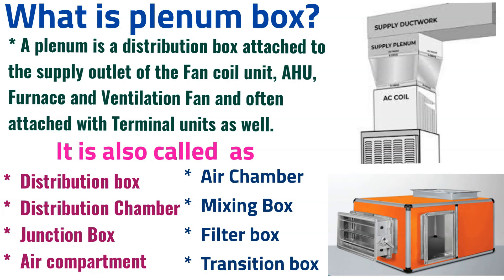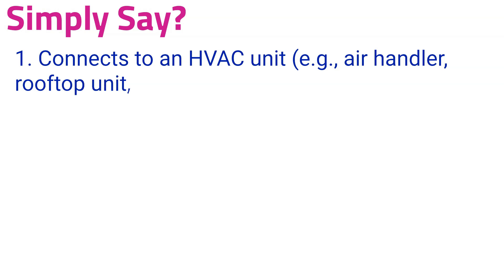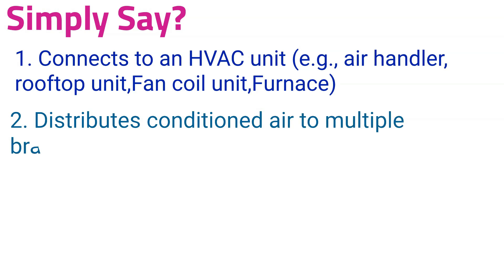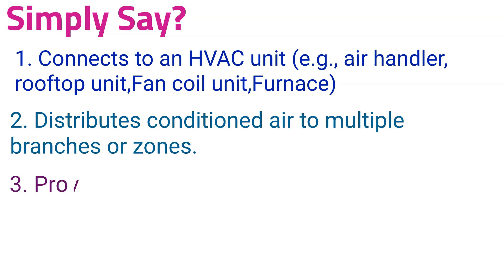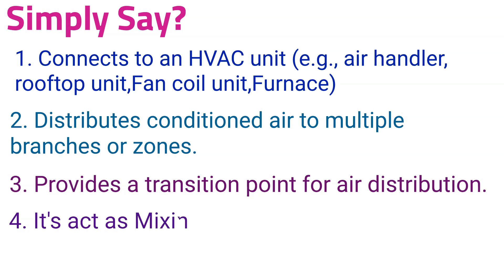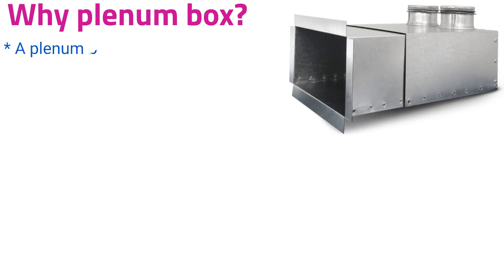The plenum box is also called a distribution box, distribution chamber, junction box, air compartment, air chamber, mixing box, filter box, or transition box. In summary: it connects to an HVAC unit such as an air handler, rooftop unit, fan coil unit, or furnace; it distributes conditioned air to multiple branches or zones; it provides a transition point for air distribution; it acts as a mixing box and filter box; and it attenuates noise levels.